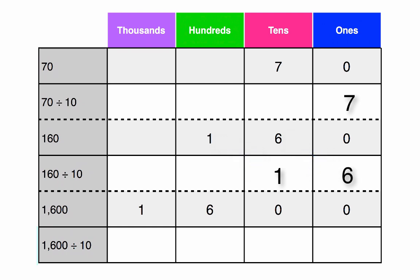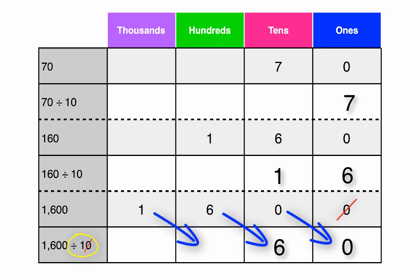Now let's do our final problem: 1,600 divided by 10. Remember, we are dividing by 10, so we are only getting rid of 1 zero and moving one place value to the right. The 0 from the 10s moves to the 1s, the 6 from the 100s moves to the 10s, and the 1 from the 1,000s moves to the 100s, leaving us with the answer of 160.